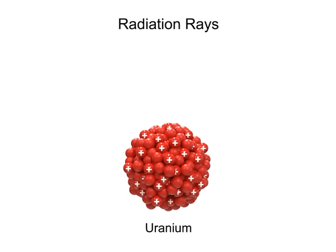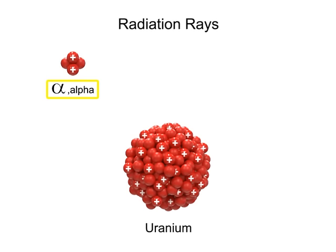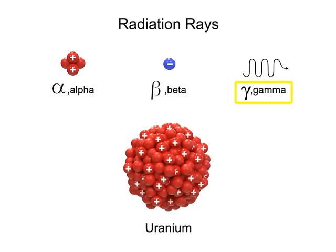The nucleus of radioactive material emits three different types of radiation rays, called alpha, beta, and gamma.